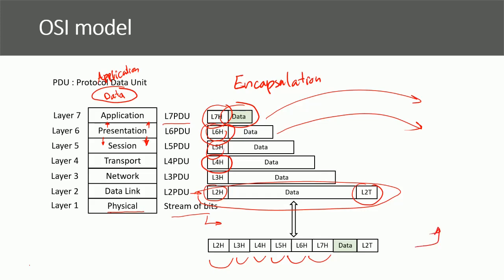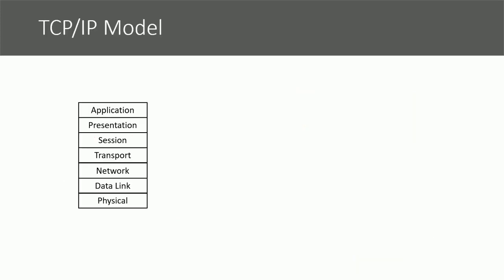The other host does the opposite process. Layer 2 looks at the layer 2 header and decapsulates it, then layer 3 looks at its header and decapsulates it, and so on, until the application layer receives the data and it is processed by the application. Currently, the TCP/IP model is the model used by network devices and is the model that's part of the CCNA course.